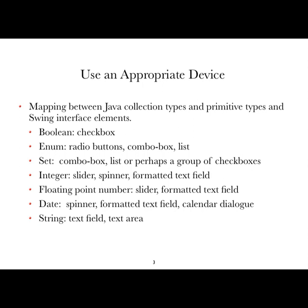One way to think about this is that some of these basic primitive types and collection types fit well with some of the interface elements in Swing. We might think about booleans being matched to checkboxes — either you tick the box or you don't. You might think about enumerations and various different kinds of collections fitting with certain kinds of user elements. And then numbers: do you want to use a slider, a spinner where you choose from a long list of numbers, or do you want to allow people to put that in as a text field?